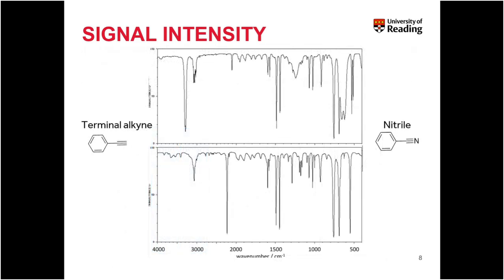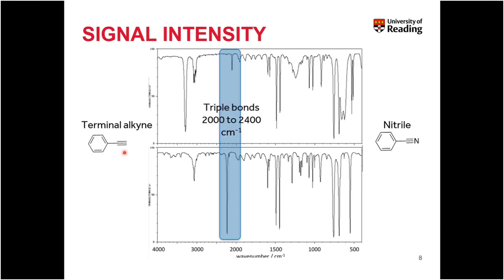The electronegativity of the atoms on either side of a bond can also strongly affect the signal intensity seen in the infrared spectrum. To illustrate this, we can match two infrared spectra to two molecules: a terminal alkyne on the left, containing a carbon-carbon triple bond and a terminal carbon-hydrogen bond, and a nitrile on the right, containing only a carbon-nitrogen triple bond. Carbon-nitrogen and carbon-carbon triple bonds both absorb between 2,000 and 2,400 wavenumbers, so we need to look more carefully at peak sizes to distinguish them.